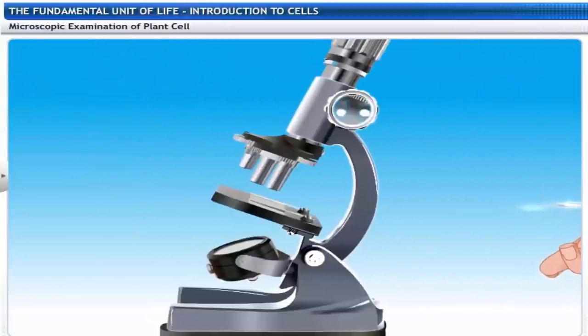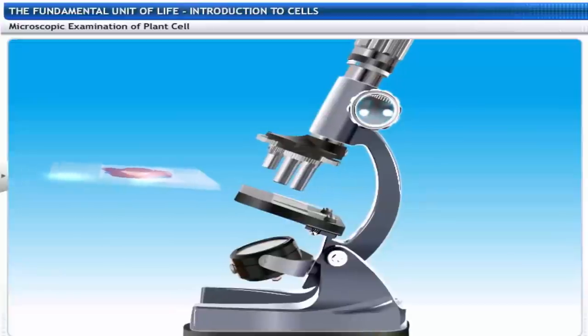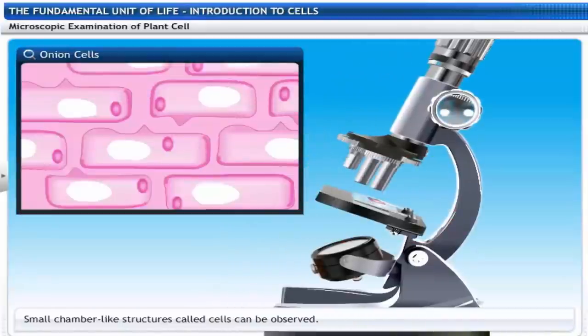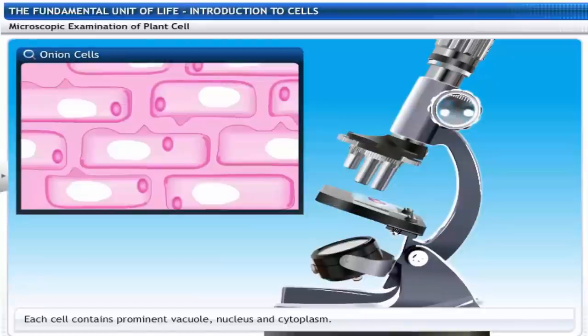Place the slide on the stage of the microscope. Small chamber-like structures called cells can be observed. Each cell contains a prominent vacuole, nucleus and cytoplasm.